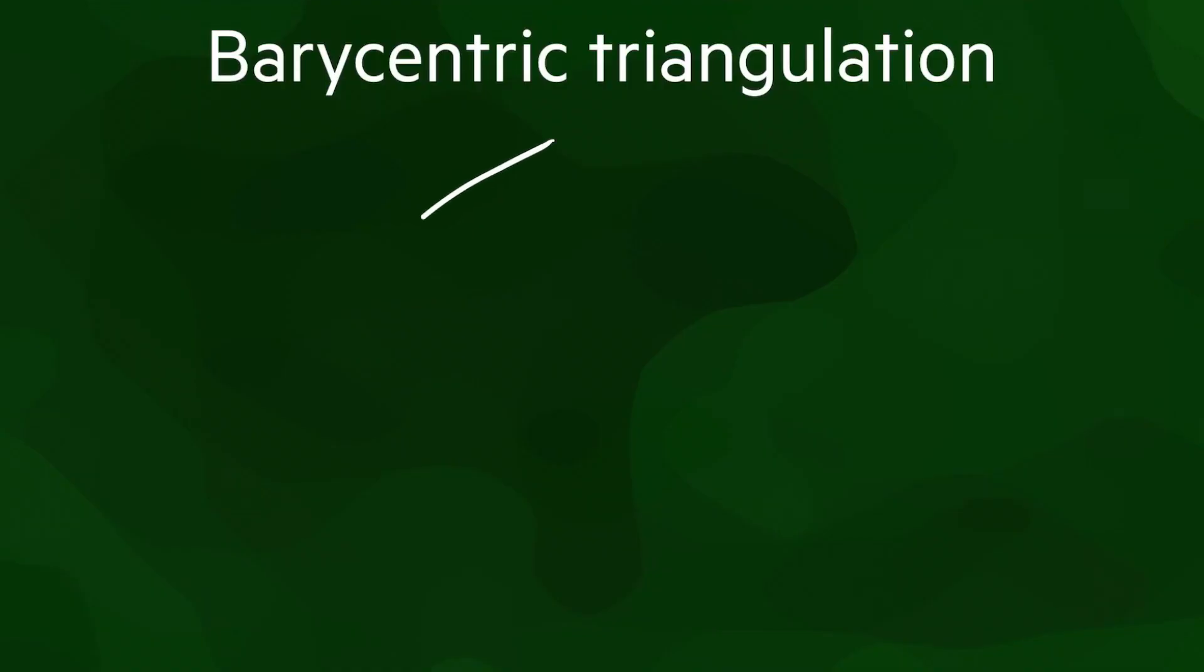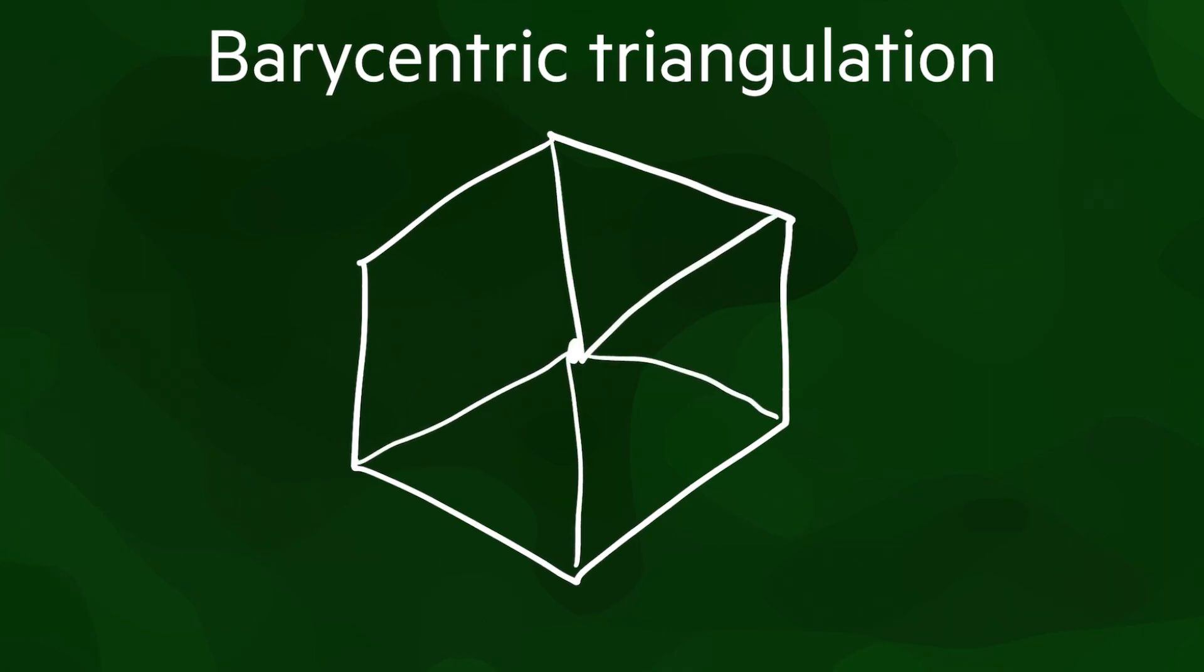In a barycentric triangulation, a roughly convex polygon can be triangulated by adding a new vertex in its barycenter, then creating the triangles by connecting every one of its existing edges to the new vertex. This process therefore creates one triangle per existing edge in the polygon, which is more triangles than what would be created if we had used a constrained triangulation.